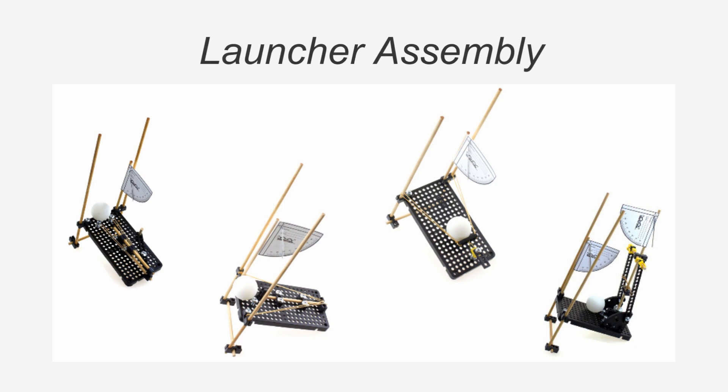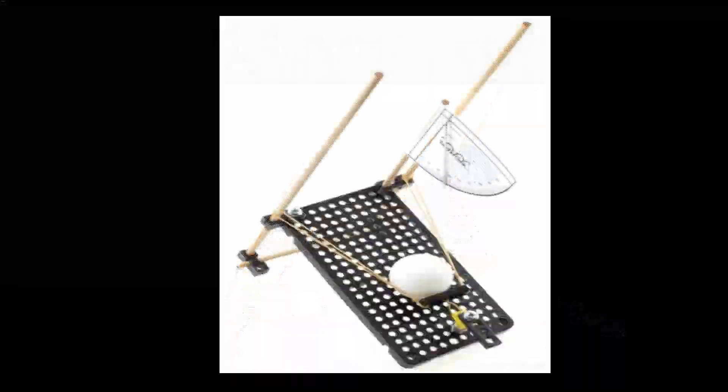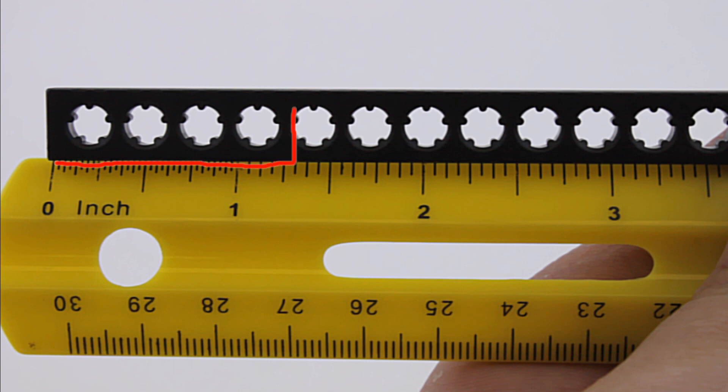There are many different types of launchers to build. I'm going to show you one, but you don't have to follow it, you can design your own. Cut two pieces of connector strips that are 32 millimeters, which is about an inch and a quarter. You want the connector strip piece to have 4 holes. Take your rubber bands and loop them through both ends of the connector strip.